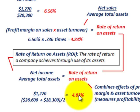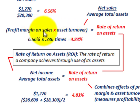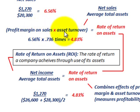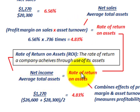Dividing that average into our net income gives us our rate of return on assets at 4.83% — the same result as multiplying profit margin on sales times asset turnover. Both methods give us the same rate of return on assets.